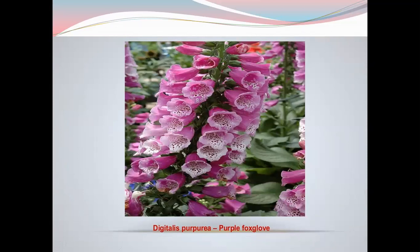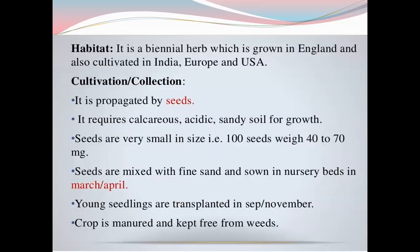When it is known, it has the same flowers but in white color. Habitat: it is a biennial herb grown in England and also cultivated in India, Europe, and USA. It requires calcareous, acidic, sandy soil for growth.